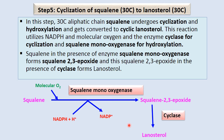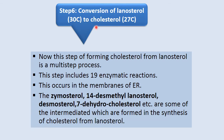Step 5 is the cyclization of squalene to lanosterol. The 30-carbon aliphatic squalene undergoes cyclization and hydroxylation. In the presence of squalene monooxygenase and molecular oxygen, squalene is converted into squalene-2,3-epoxide, which is then converted into the cyclic compound lanosterol by cyclase enzyme, in the presence of NADPH.